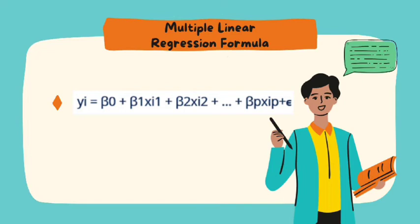Next is the multiple linear regression formula: yi equals beta 0 plus beta 1 x i 1 plus beta 2 x i 2 plus beta p x i p plus epsilon.